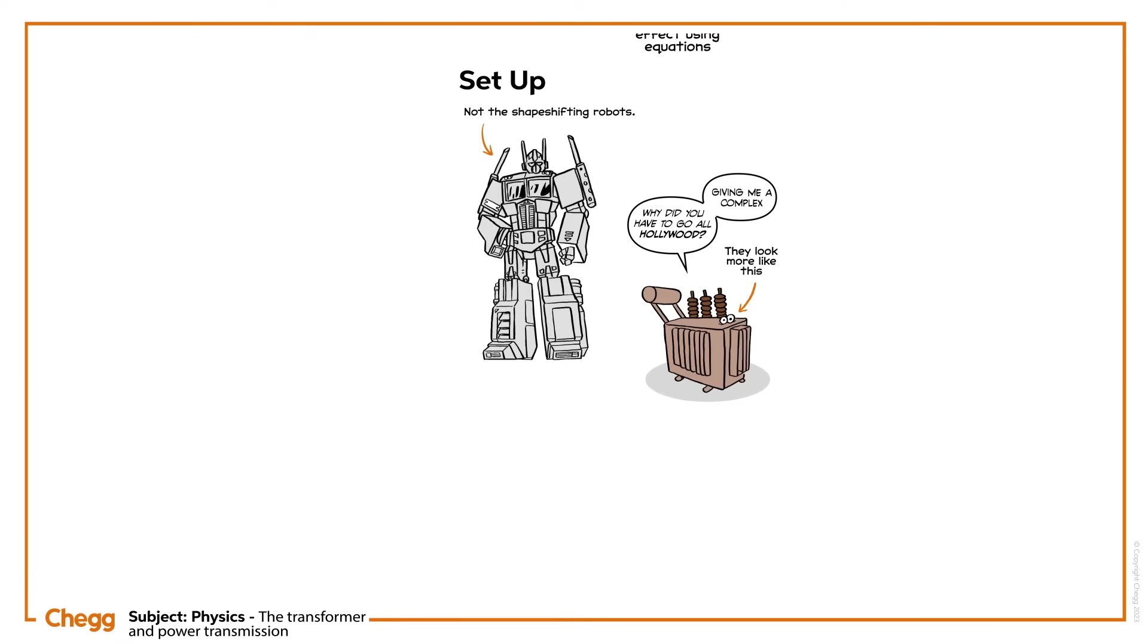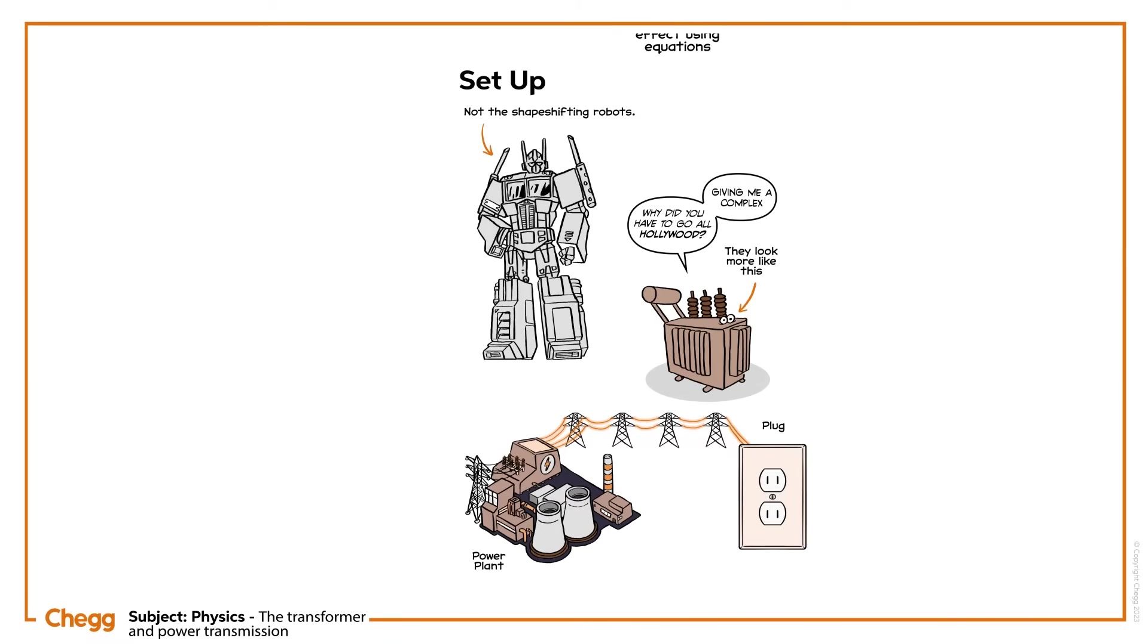We all know that we receive electricity from power plants, but as electricity makes the long journey from power plants to the plug in your home, there's a high potential for energy loss as heat. How can we prevent this?